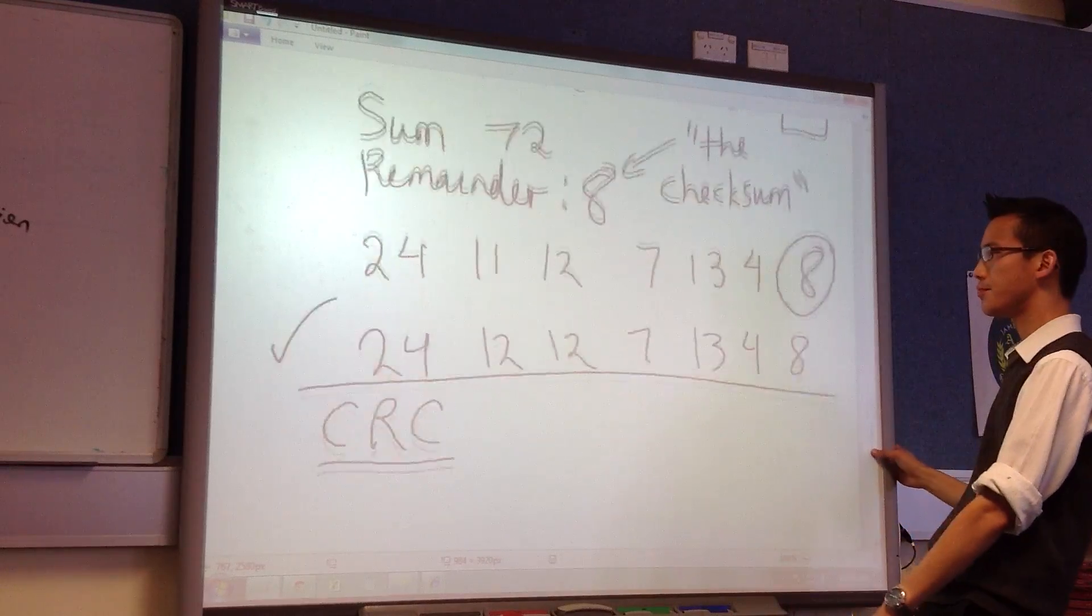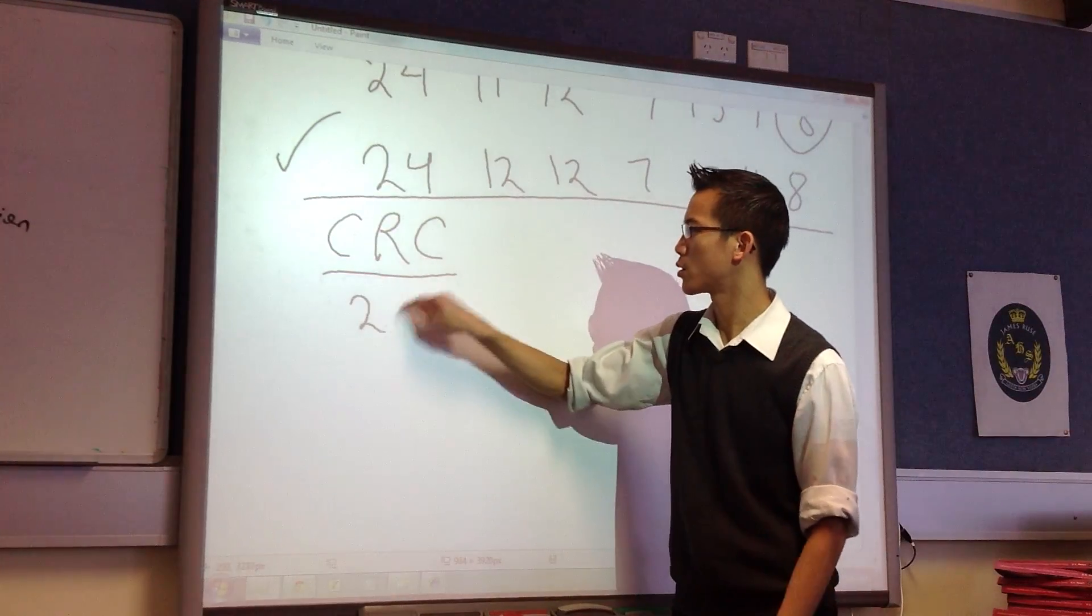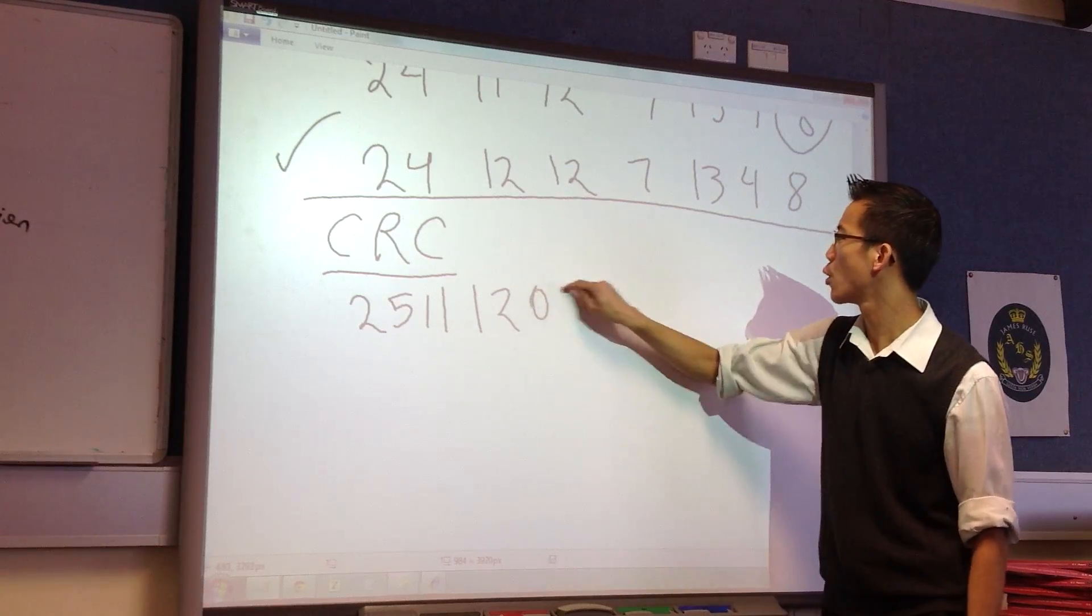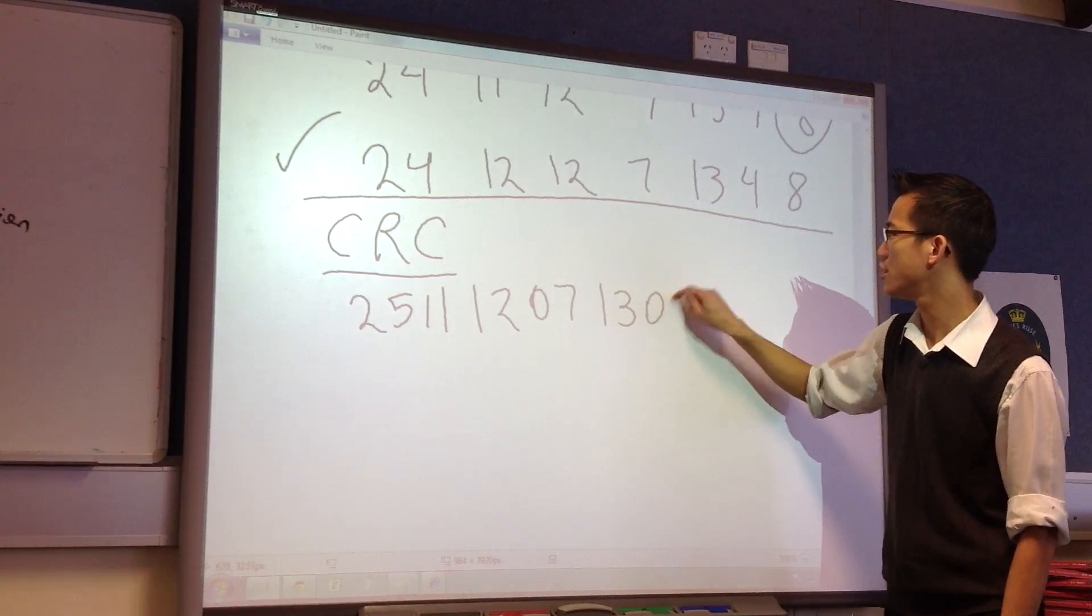So in this case, the number would be, I think it was 2, 5, 1, 1, 2, 0, 7, 1, 3, 0, 4.